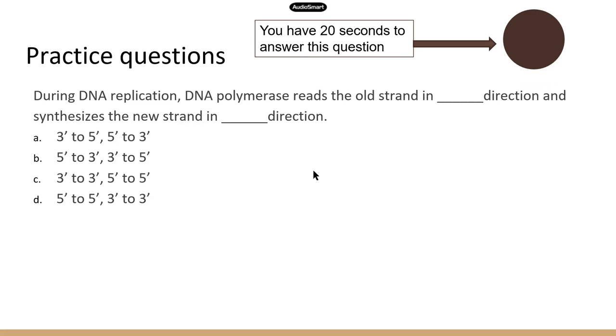With that, let's do a couple more practice questions about the direction. So this is question one. During DNA replication, DNA polymerase, which is the enzyme that replicates DNA, reads the old strand in three to five direction and synthesizes the new strand in five to three. Because the new strand has to be antiparallel to the old strand, so it will go in the opposite direction, which is five to three.